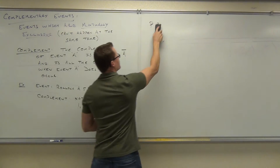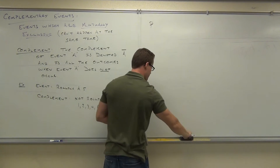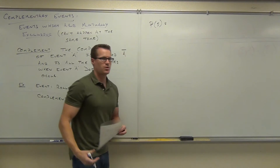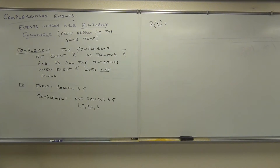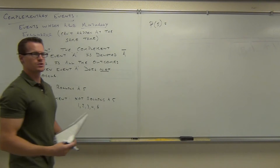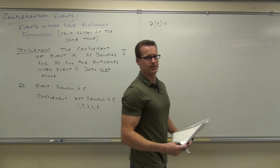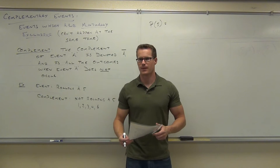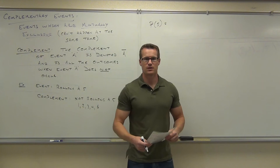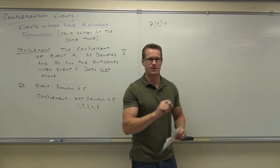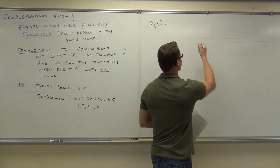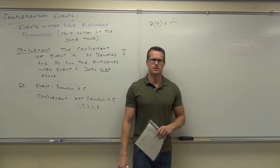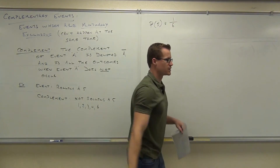When I say five, I mean rolling a five. What's the probability of rolling a five? How many outcomes are going to let us accomplish our event of rolling a five? How many fives are on the die? There's only one specific outcome that's going to allow us to accomplish this particular event. So our probability is going to be one out of six.